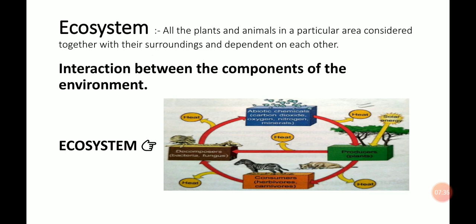Now move to the next topic: ecosystem. What is an ecosystem? An ecosystem is made up of animals, plants, and bacteria as well as the physical and chemical environment they live in. This means that an ecosystem consists of a biotic environment as well as an abiotic environment, and they are interdependent on each other. Let me explain with the help of this chain — just observe this chain visible on your screen.